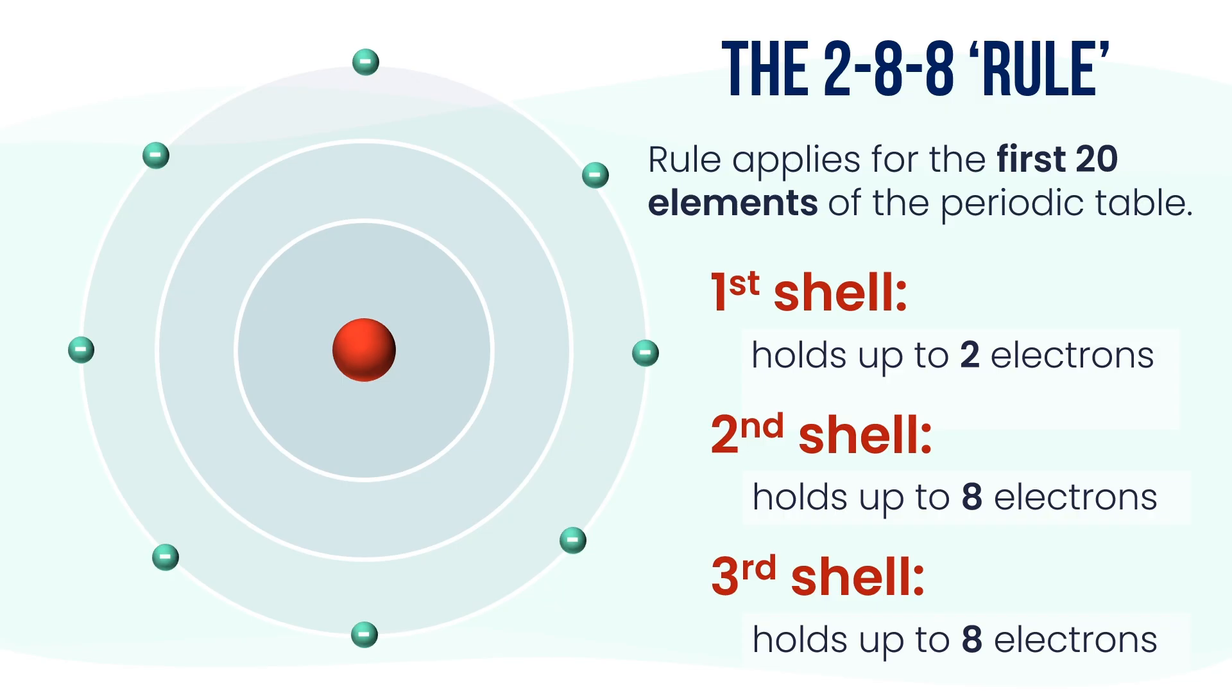This isn't a strict rule—it's more like a shortcut for beginners, and it works well for the lighter elements. You may also hear it referred to as part of the octet rule, which says atoms tend to have 8 electrons in their outermost shell. So beyond element 20, the patterns become more complex due to sub-levels, but you'll learn that in higher grades.